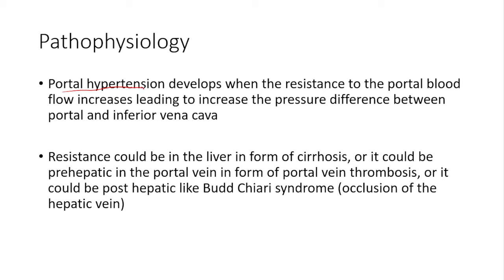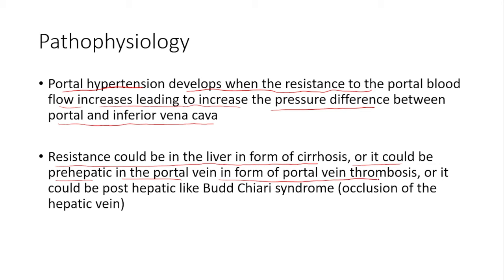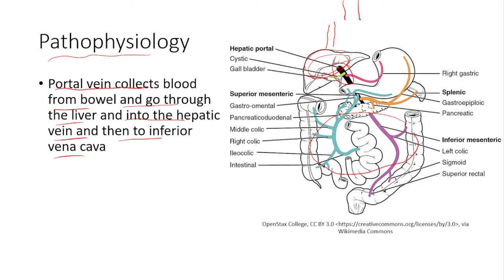Portal hypertension develops when the resistance to portal blood flow increases, leading to an increased pressure difference between the portal vein and the inferior vena cava. The resistance could be in the liver in the form of cirrhosis, pre-hepatic in the portal vein as portal vein thrombosis, or post-hepatic like Budd-Chiari syndrome — occlusion of the hepatic vein.